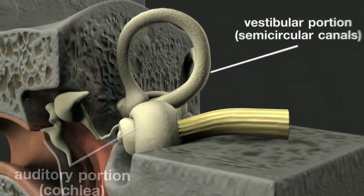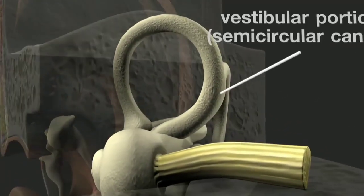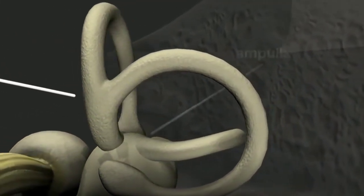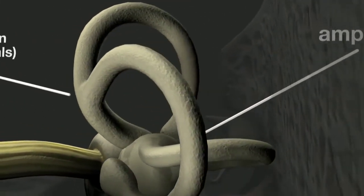The vestibular portion is made up of three semicircular canals. Each canal has a swelling at one end, the ampulla, and two membranous sacs.